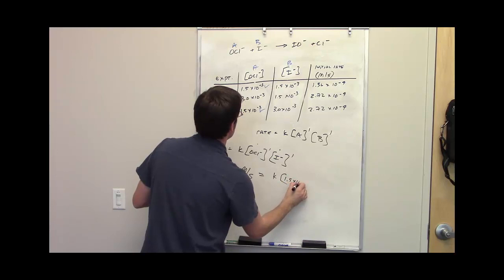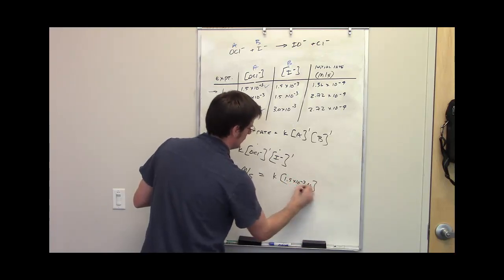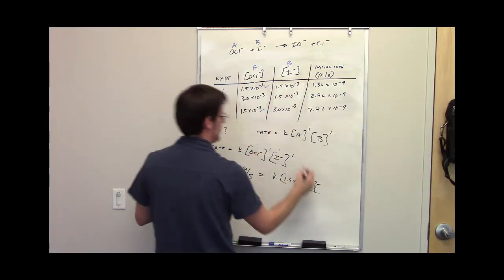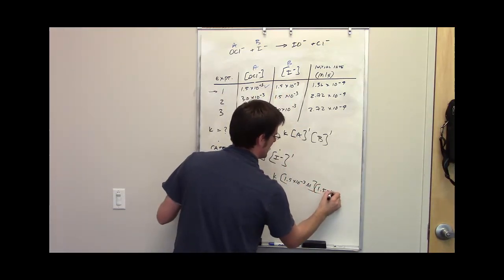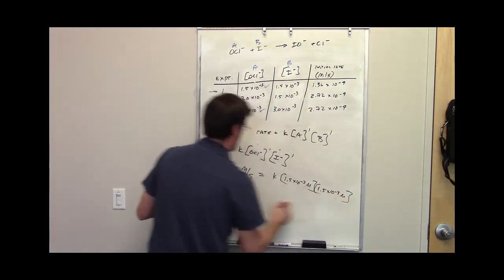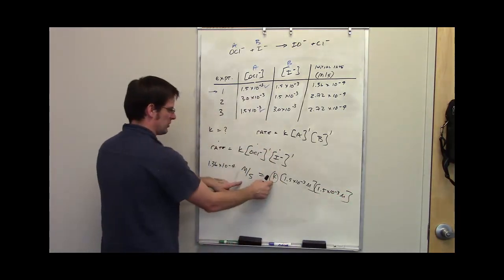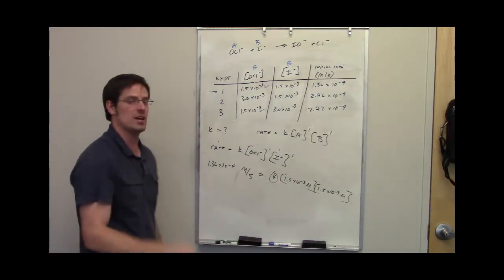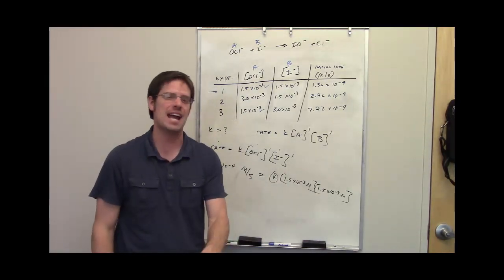I set that equal to K multiplied by the concentration of hypochlorite in experiment 1, which is 1.5×10^-3 molar, multiplied by the concentration of iodide component B, which is also 1.5×10^-3 molar. Now all I have to do is use algebra to solve for K by taking all of this and moving it over here. I'll let you go ahead and do that on your own to see if you can figure out what K actually is.